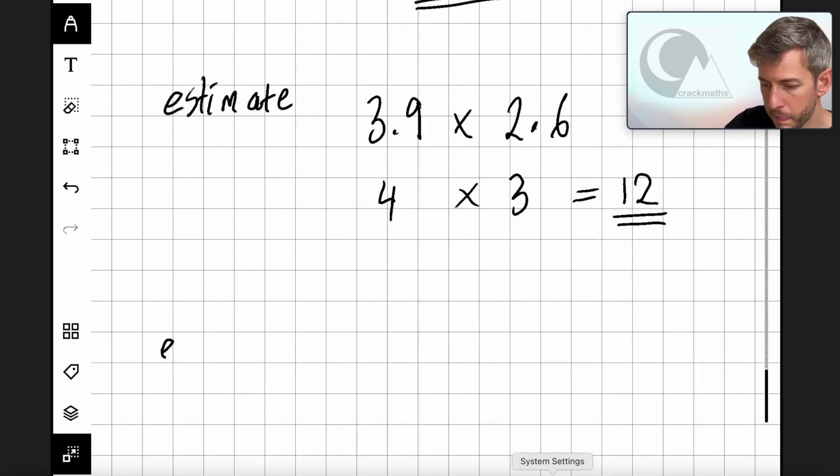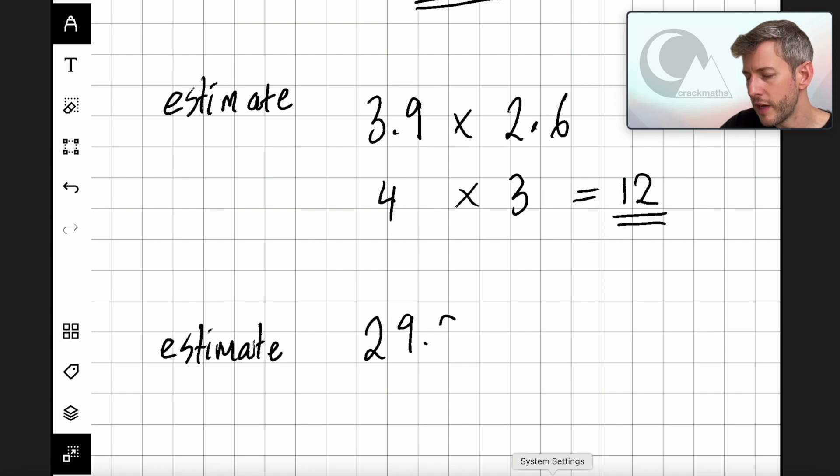Let's say estimate 29.5 multiplied by 1257. Remember, we're rounding to one significant figure. So no matter how many numbers there are, we only want one non-zero number in the thing that we're going to estimate. So 29.5 to one significant figure, we look at the 2. The 9 makes the 2 round up to a 3. So we call this 30. And that makes sense, because we know that 29 is a lot closer to 30 than it is to 20.